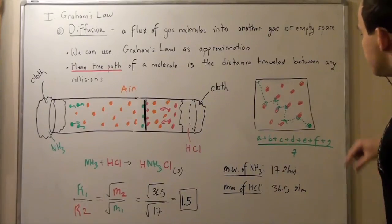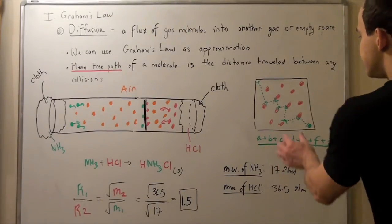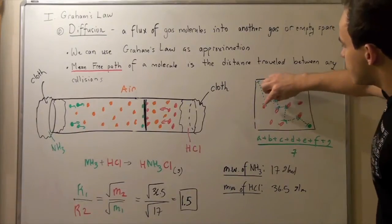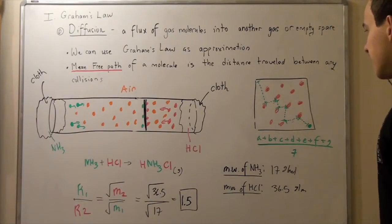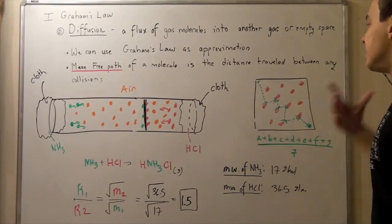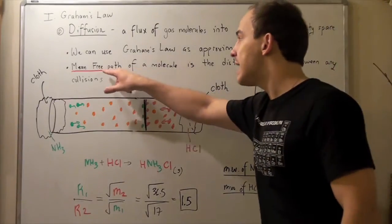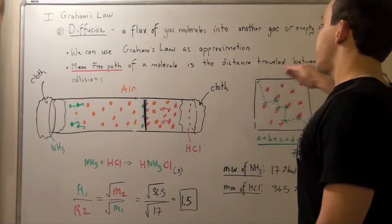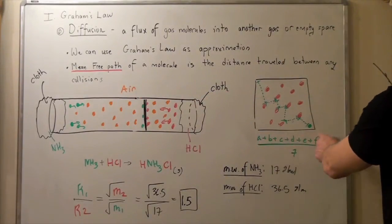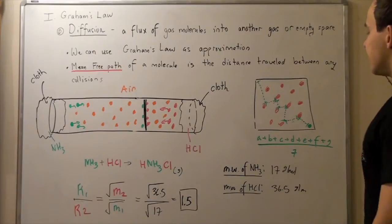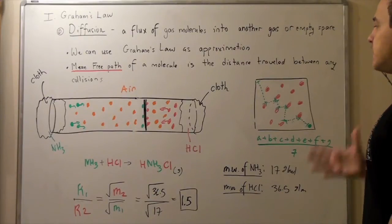So it's going to travel some distance A, then distance B, then C, D, E, F, and finally G. So each time it collides and it bounces off. Now to find the mean free path or the average distance between any two collisions, I simply add up all the distances and divide by the number of collisions. And that's my mean free path.